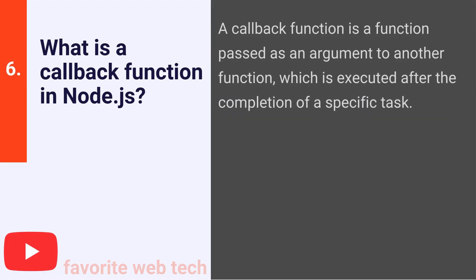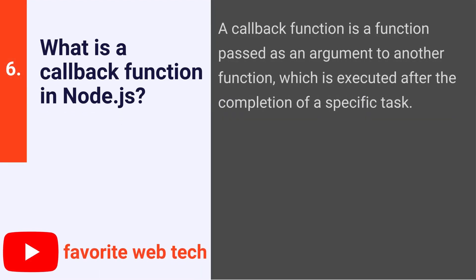What is a callback function in Node.js? A callback function is a function passed as an argument to another function, which is executed after the completion of a specific task.